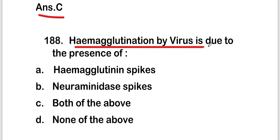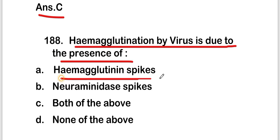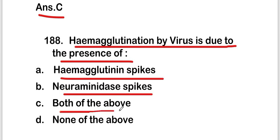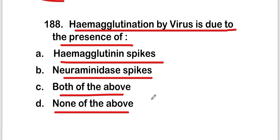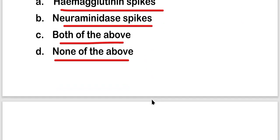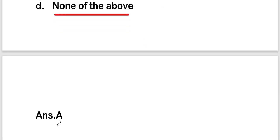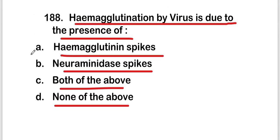The next question: hemagglutination by virus is due to the presence of — hemagglutinin spike, neuraminidase spike, both of the above, or none of the above. The right answer is option A — hemagglutinin spike. Hemagglutination by virus is due to the presence of hemagglutinin spike.